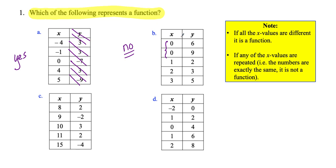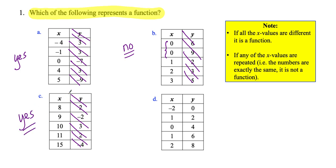So again, in B, the x values are repeated — not a function. Let's look at C. Are all the x values different? 8, 9, 10, 11, 15 — yes, all the x values are different. It's a function. Also note: when dealing with functions, you're not looking for any patterns. These numbers don't have to be in order; that has nothing to do with it being a function. It just has to do with whether all the x values are different.